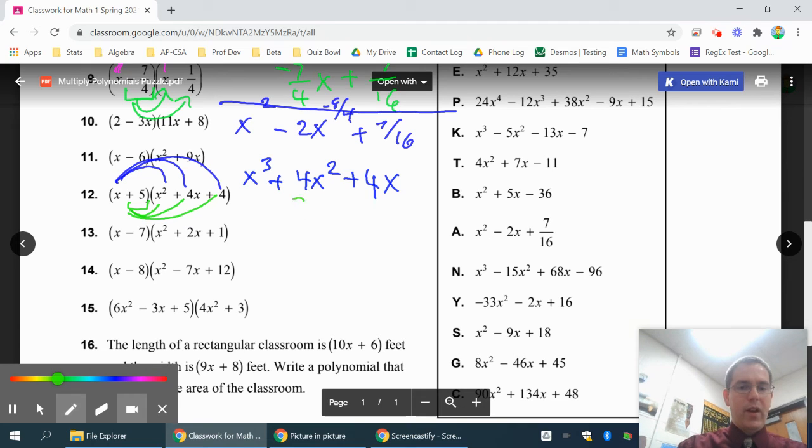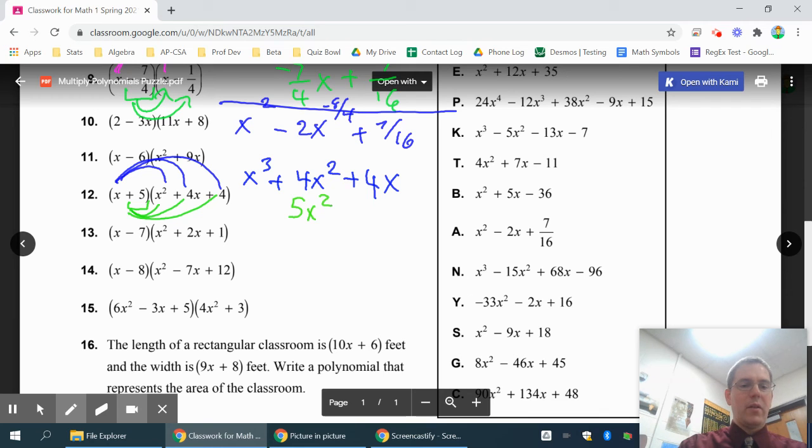We'll switch to my green color. 5 times x squared is 5x squared. And notice how if I start lining it up, it'll line up nicely the whole problem. 5 times 4x is 20x. And then 5 times 4 is 20.